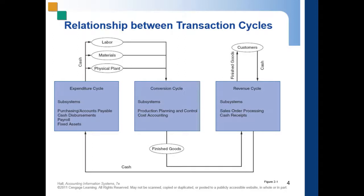Another form of expenditure is payroll, which is when you purchase labor. The payroll system collects labor usage data for each employee, completes the payroll, and disburses paychecks to employees. Conceptually, payroll is a special case of a purchase and cash disbursement system because it is more complicated compared to a normal disbursement — it includes government benefits, specific deductions, and various computations that are not as straightforward as accounts payable.